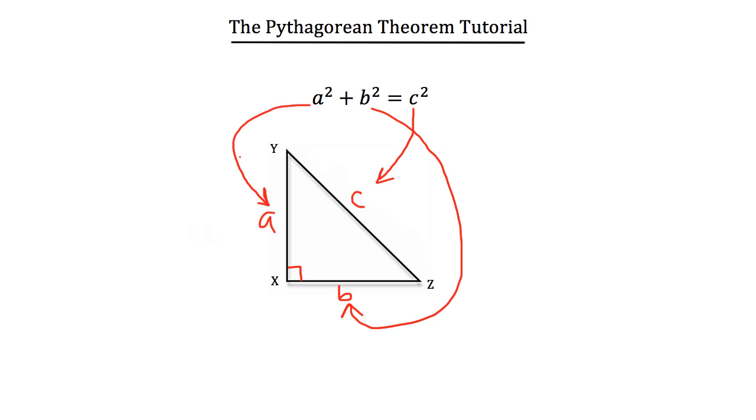It's not important which leg is a and which leg is b, but it is important that the hypotenuse is labeled as c when using the Pythagorean Theorem. So let me show you how this would work on a practice problem. Let's say that you were given two legs of a right triangle and you didn't know the length of the hypotenuse. So let's say that this side is 4 and segment XZ is 6, but we don't know the hypotenuse and we want to solve for it.